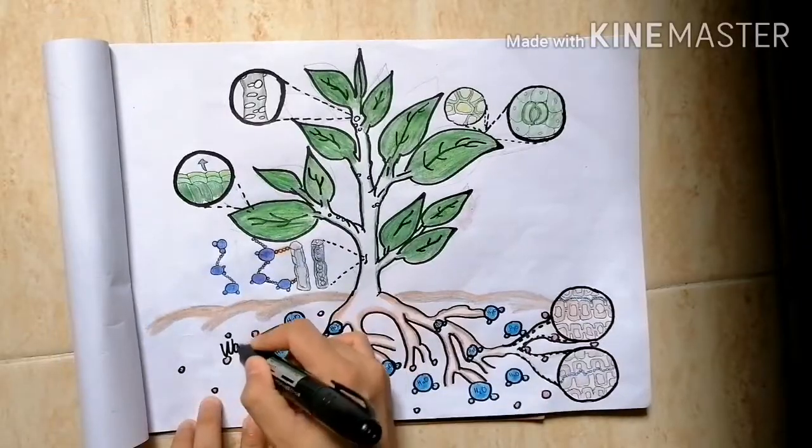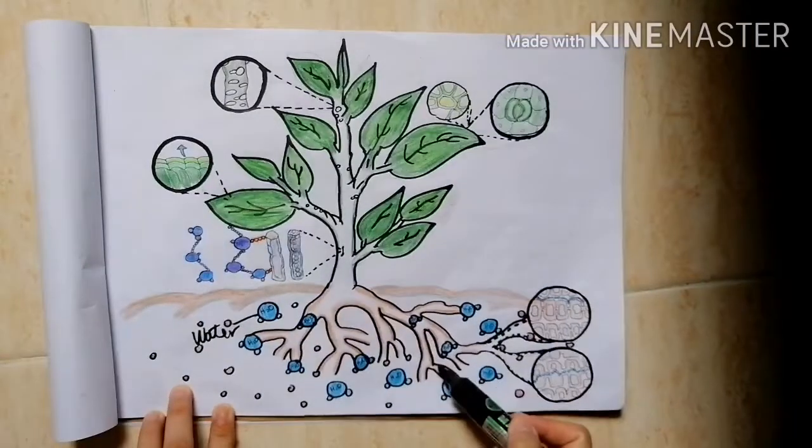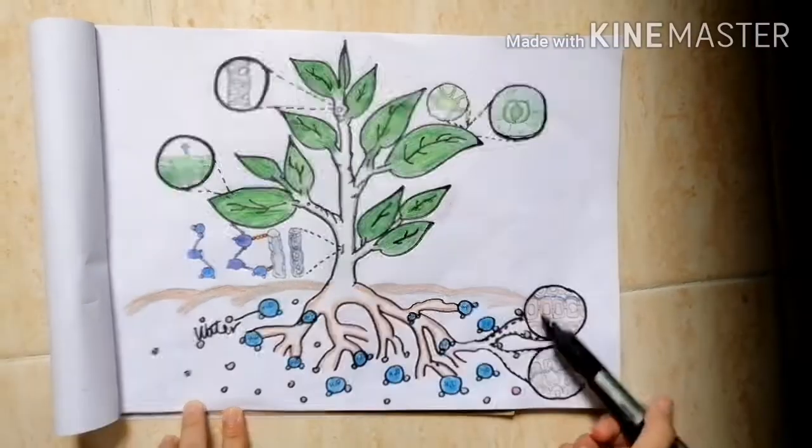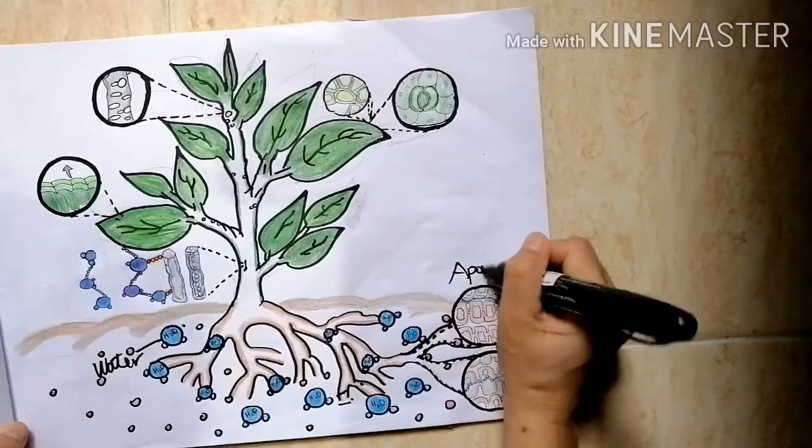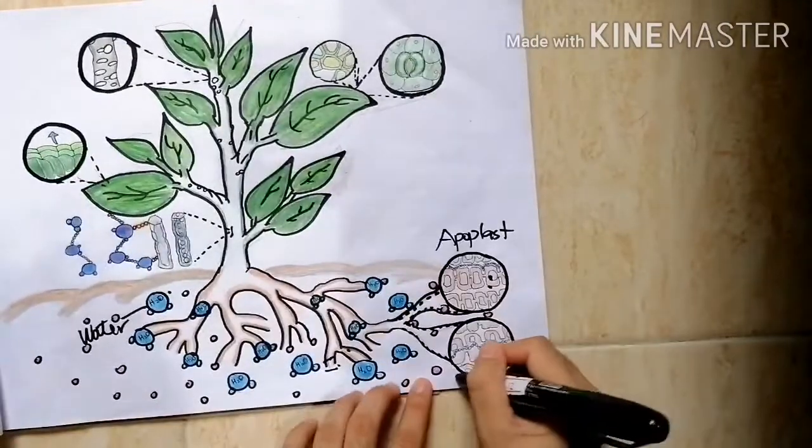So, how does transpiration take place in plants? In plants, water is absorbed by the root hairs and moves through two pathways: the apoplast pathway and the symplast pathway.